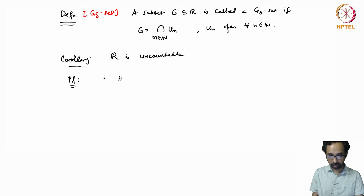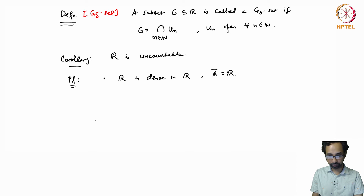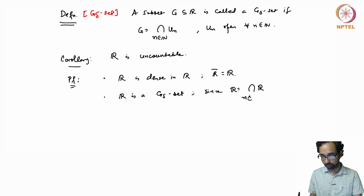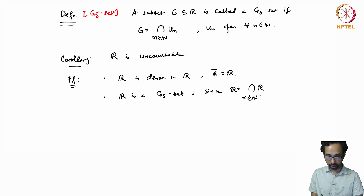We just have to show that R itself is a dense G-delta set. First, R is trivially dense in R since the closure of R is R. Secondly, R is a G-delta set since R is the intersection of the Uₙ's where every Uₙ is R itself. So R is a dense G-delta set, and this implies from the theorem that R is uncountable.